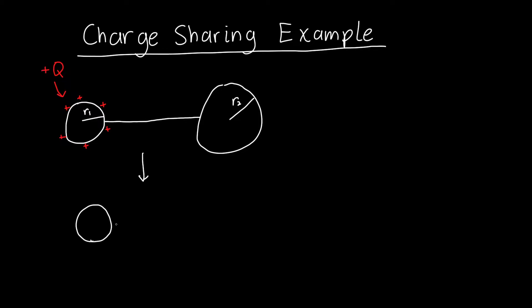Now the question is, how much charge is on each sphere? How does this initial charge get distributed? This sphere has an amount of charge Q1 on it, this one has Q2. What is Q1 and Q2 equal to?